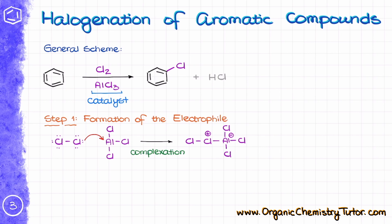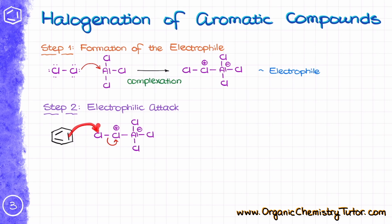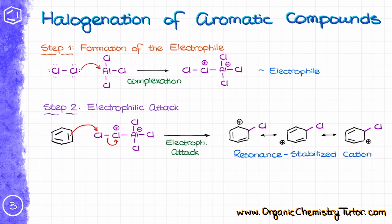Many metal halides are good Lewis acids, meaning they are good at accepting electrons. Aluminum chloride is an exceptional Lewis acid, so it will pull the chlorine towards itself to steal some of its electron density. This yields a new complex between the chlorine molecule and aluminum. Because chlorine has to provide some of its electron density to make this new bond, it becomes very electrophilic since it is now electron depleted. This new complex is our electrophile, and in the next step we perform the electrophilic attack on the aromatic ring.